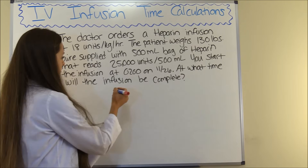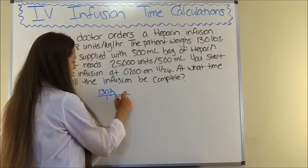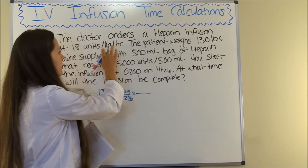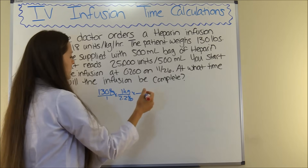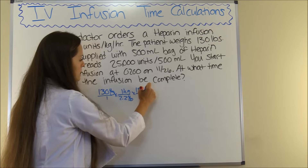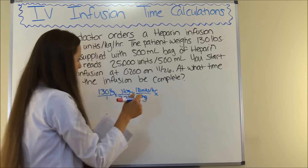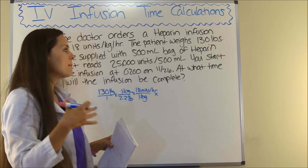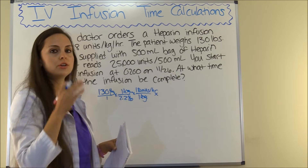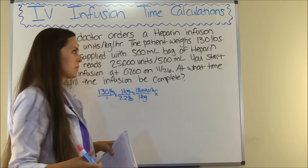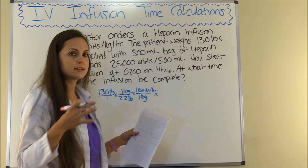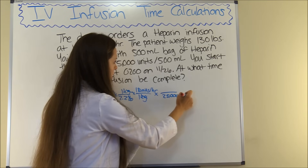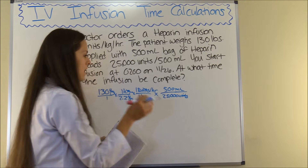Let's start with dimensional analysis. The patient weighs 130 pounds, and we know 2.2 pounds equals 1 kilogram — pounds cancels out. Now we plug in what the physician ordered: for every kilogram, the patient receives 18 units per hour, so 1 kilogram equals 18 units per hour. Kilograms cancels out. Then we plug in what we're supplied with: a 500-milliliter bag containing 25,000 units of heparin. So there are 25,000 units per 500 milliliters — units cancels out, and we're in milliliters per hour.